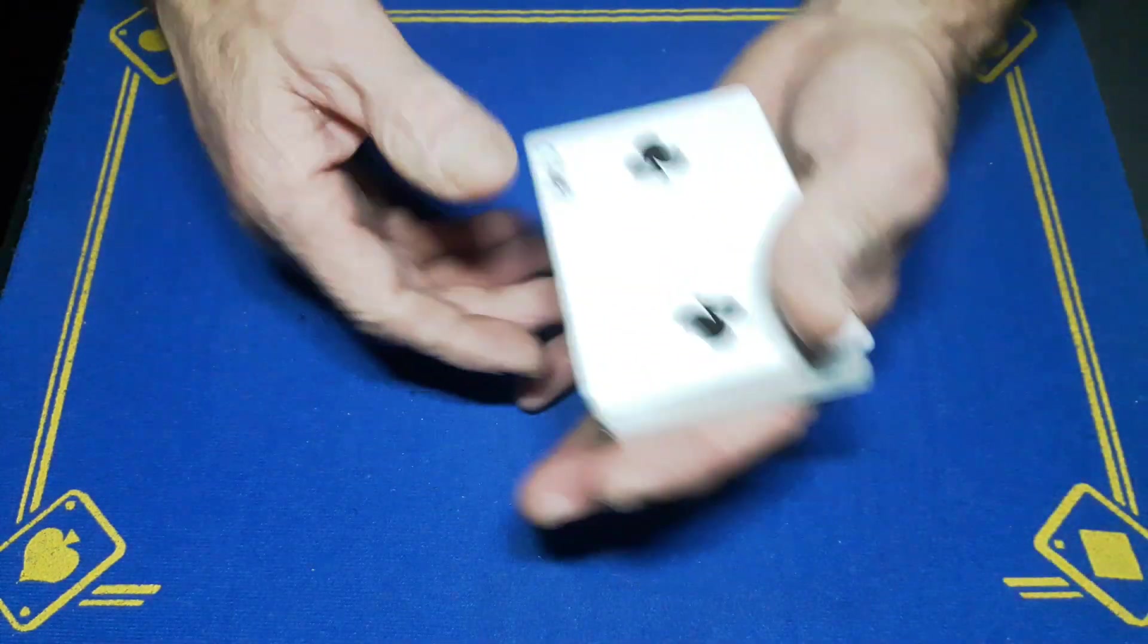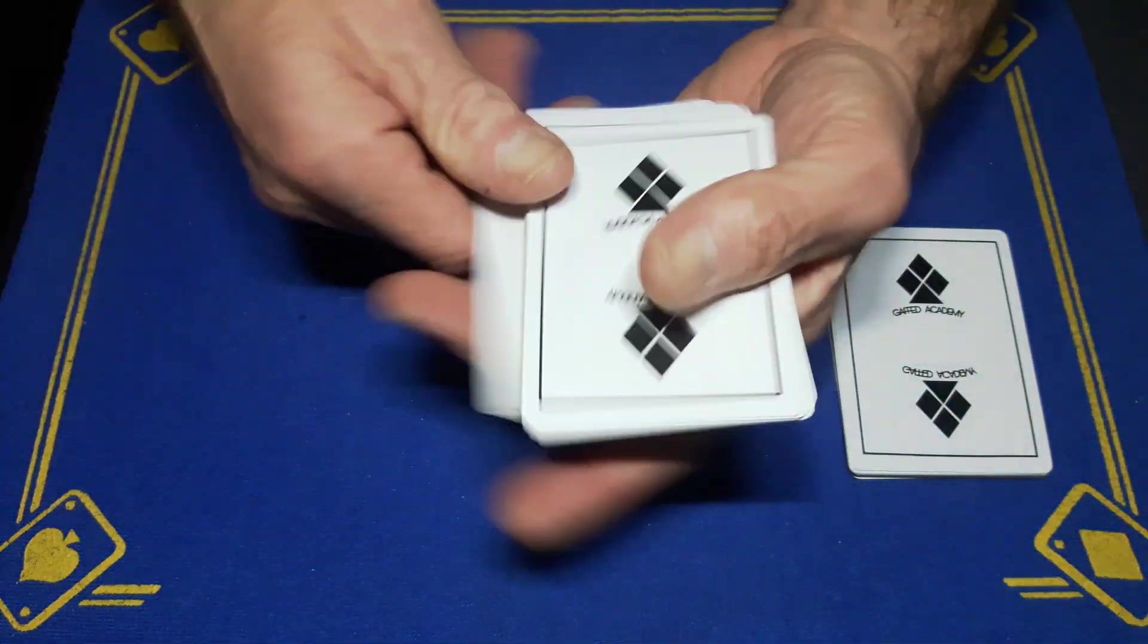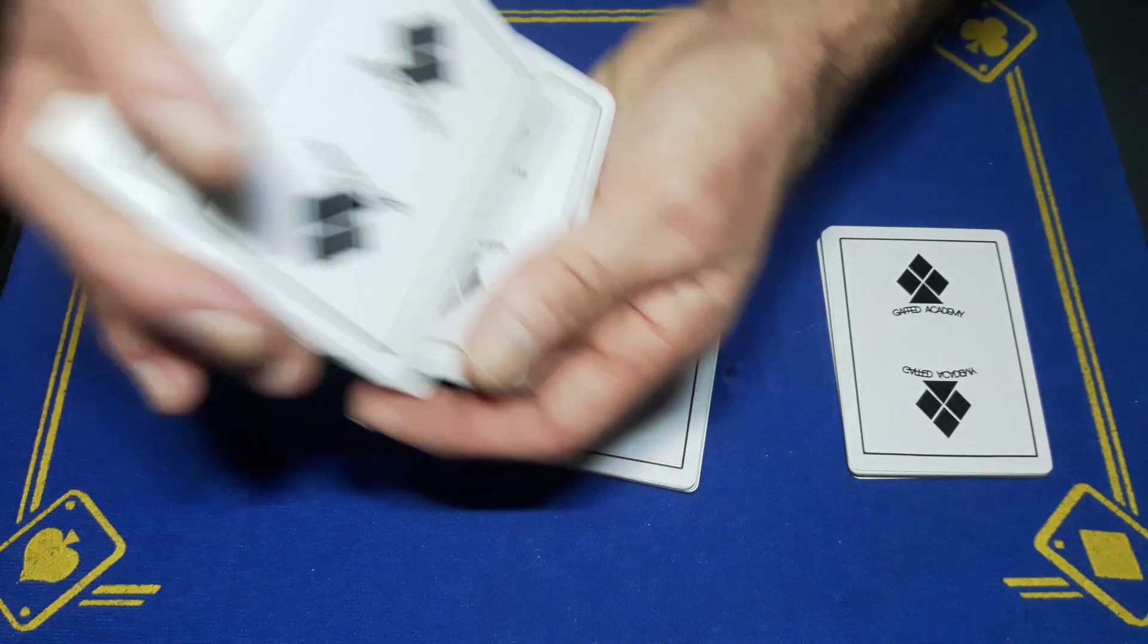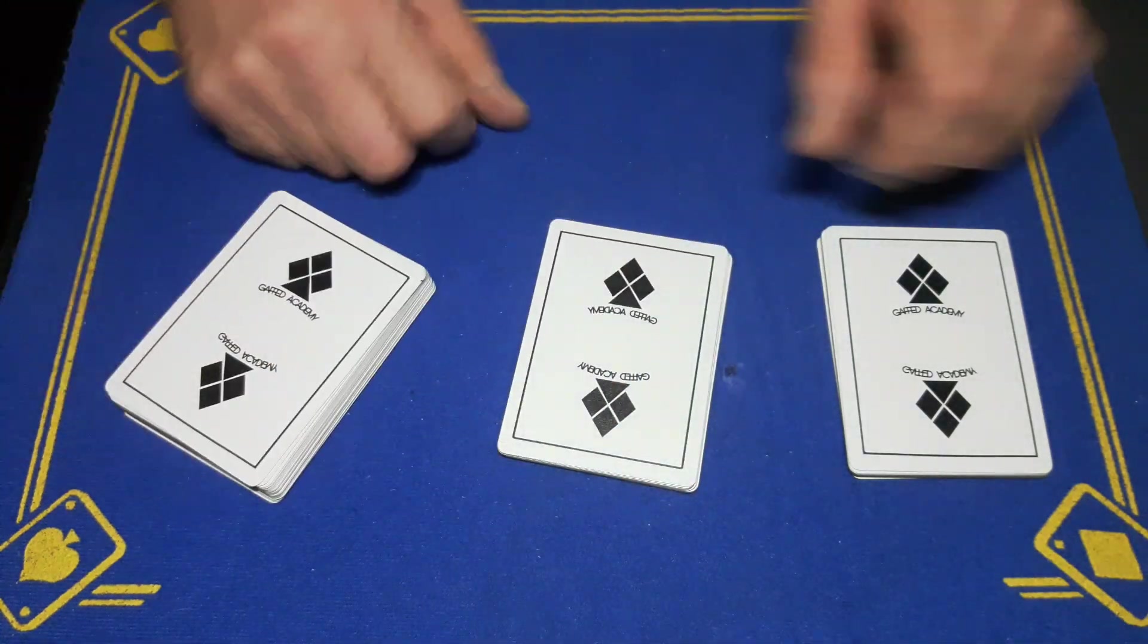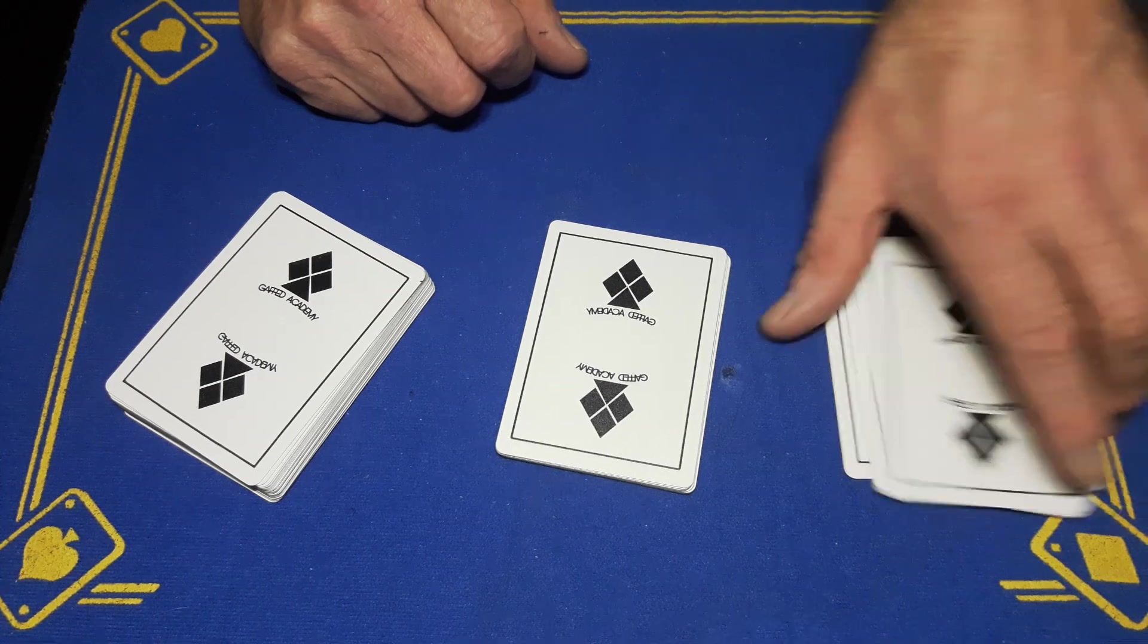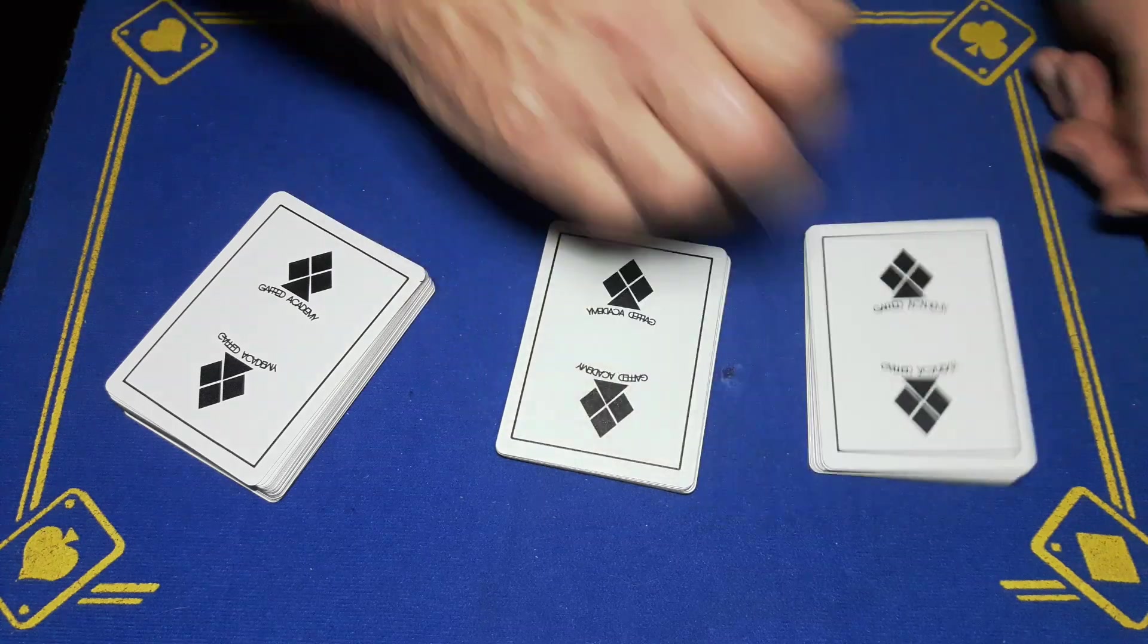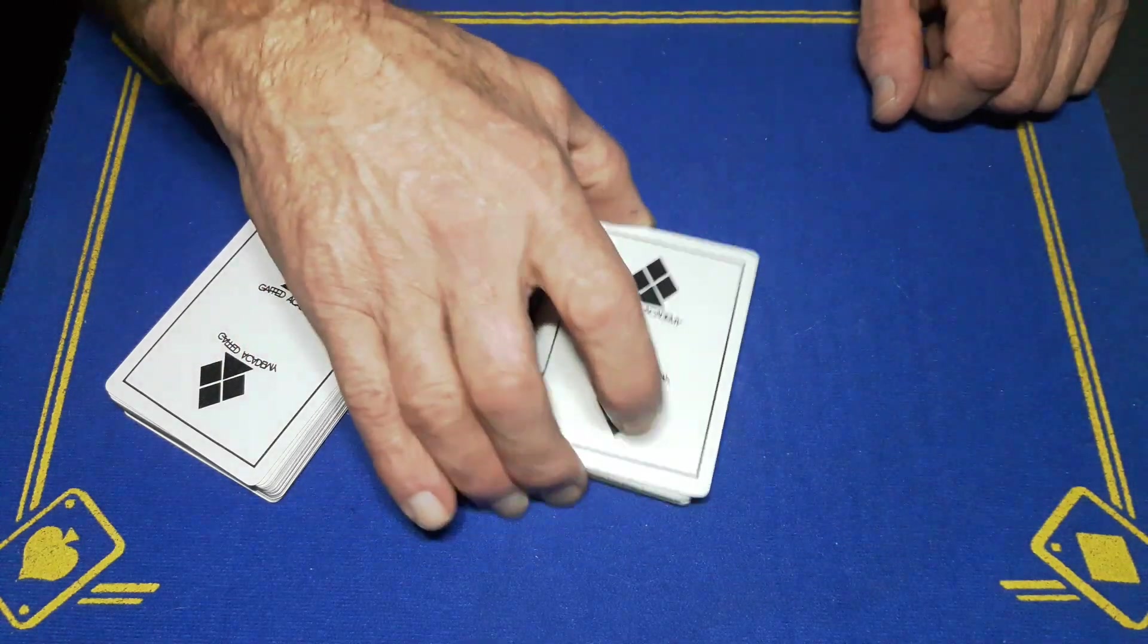You could get the spectator to cut the cards and shuffle if you want, just as a little bit of a convincer. But you do need to remember which is the top of the packet and they do need to cut at least ten cards because you need to make sure that your stack is in here. Just in case you get confused picking them up, you'll stack the top on top of the middle on top of the bottom.